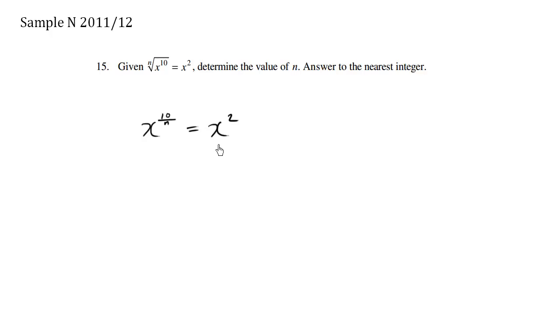So the bases are the same and what we have is these different exponents which should be equal. The exponents must be equal, so we write down 10 over n is equals to 2.